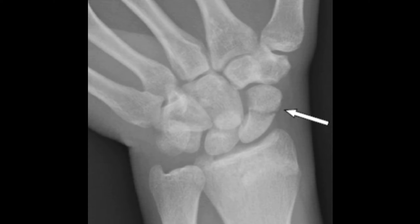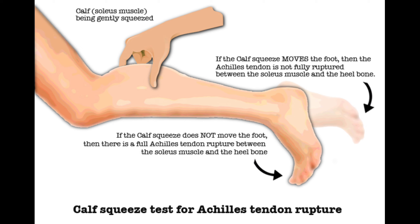In most cases you can see the scaphoid fracture after two weeks. If you can see the fracture on the first X-ray, apply a scaphoid cast for six weeks. Please keep in mind: if you miss the scaphoid fracture it can lead to avascular necrosis of the bone.